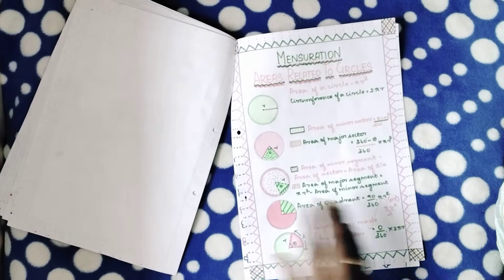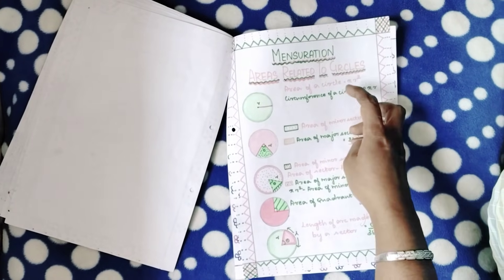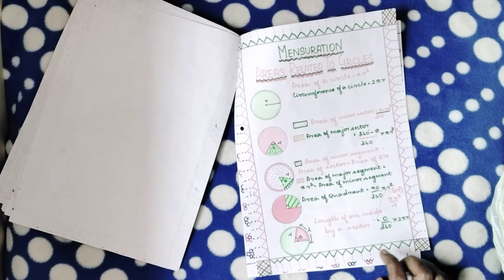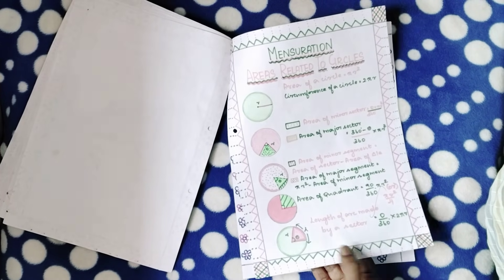Then the next page is on mensuration where the area of the circle, what is segment, what is sector, and how to find the formulas - a very simple page where the entire lesson's concept is being explained.